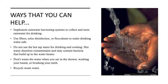Ways that you can help: Implement rainwater harvesting systems to collect and store rainwater for drinking. Use filters, solar disinfection, or flocculents to make drinking water safe. Do not use hot tap water for drinking and cooking, as hot water dissolves contaminants and may contain bacteria that build up in the water heater. Don't waste water when you are in the shower, washing your hands, or brushing your teeth. And recycle waste water.